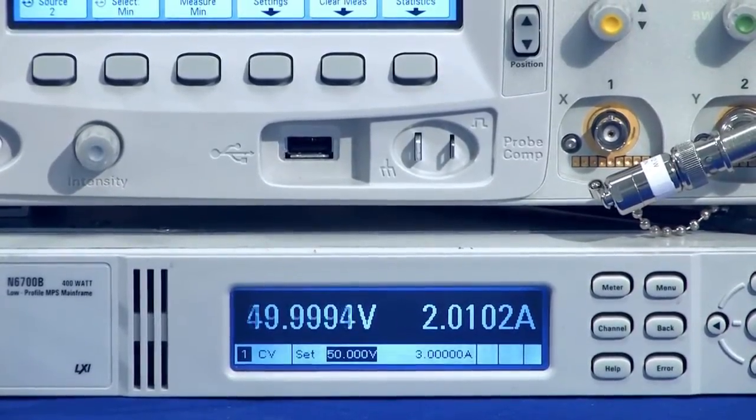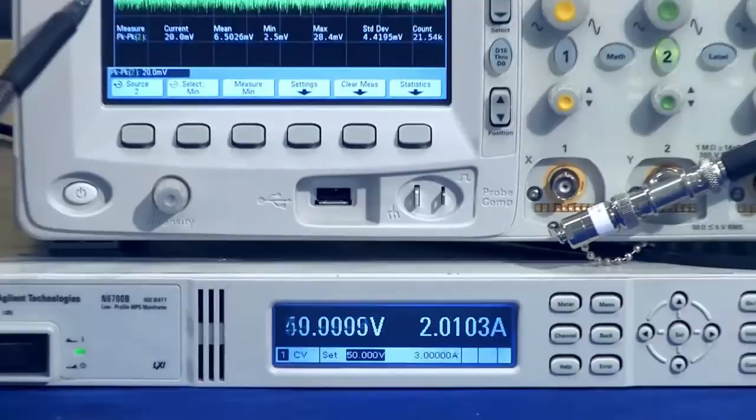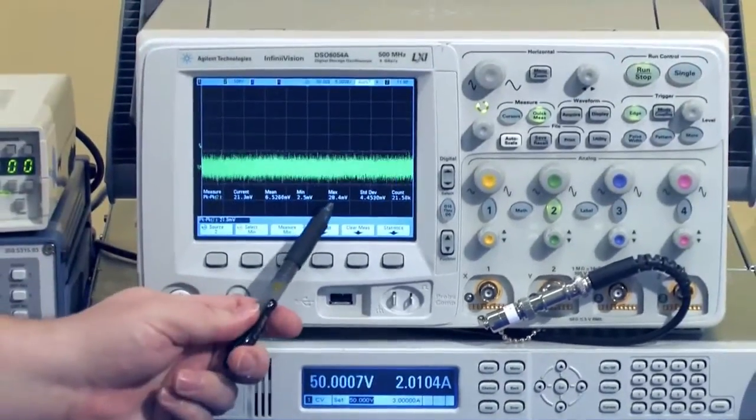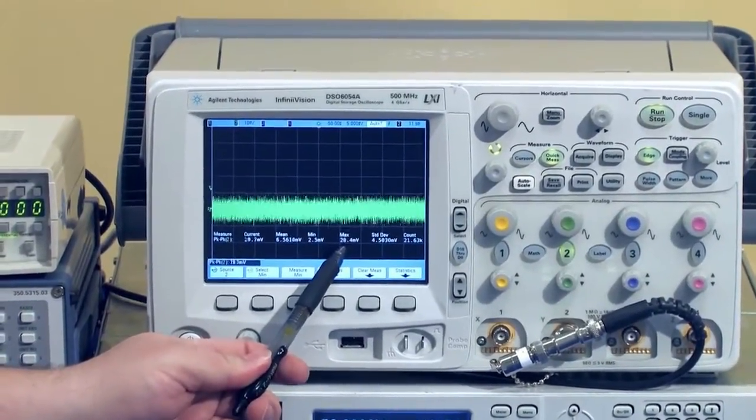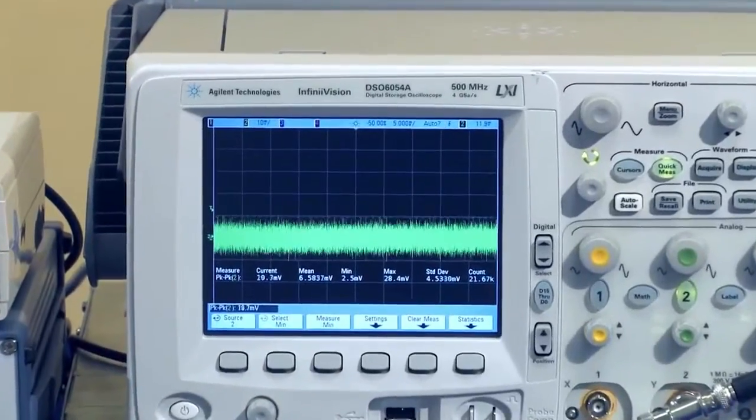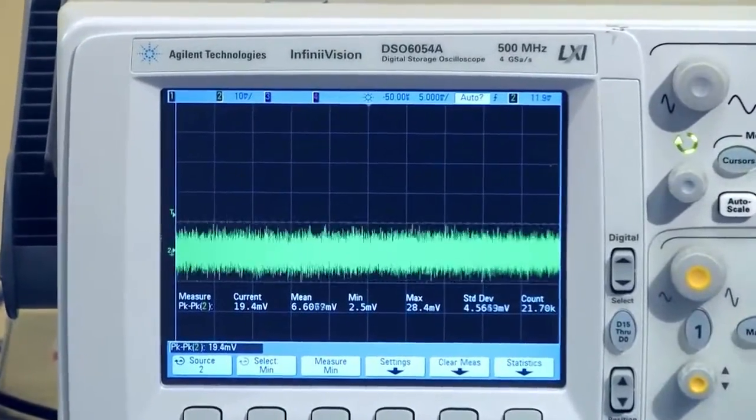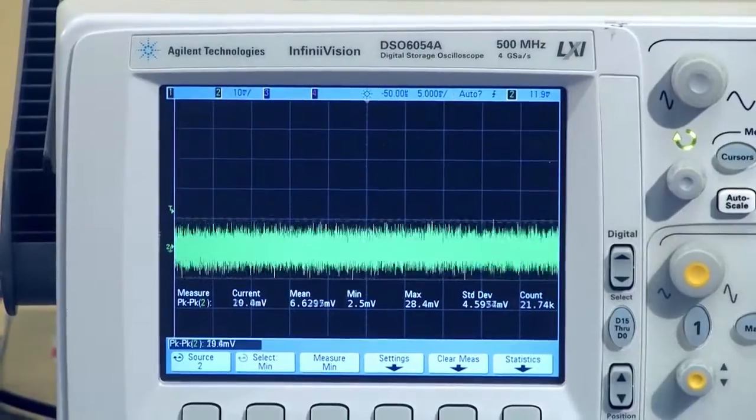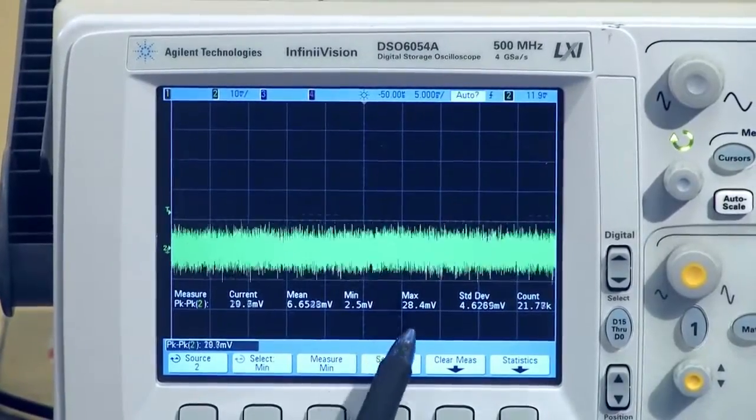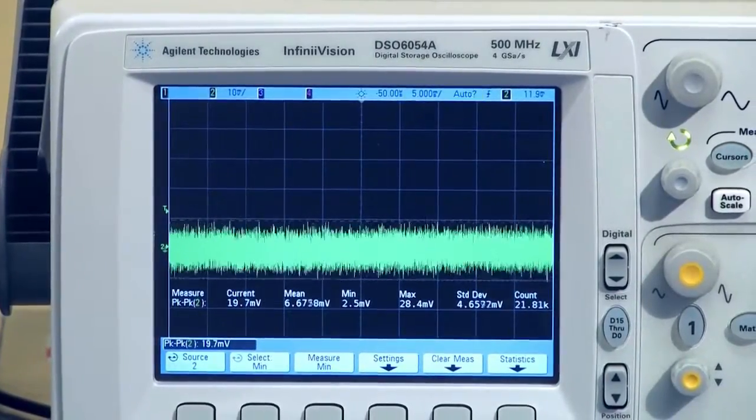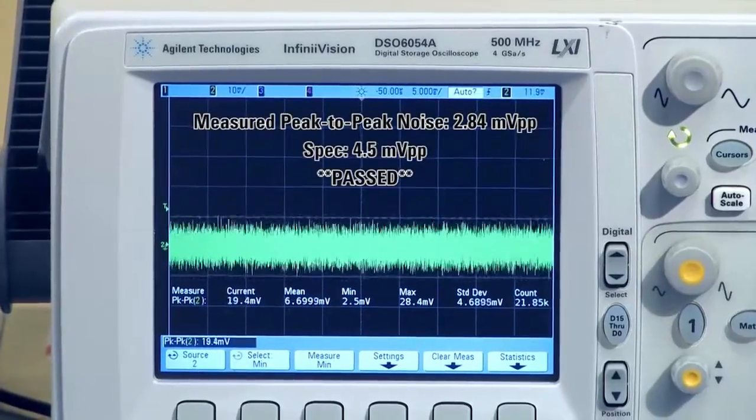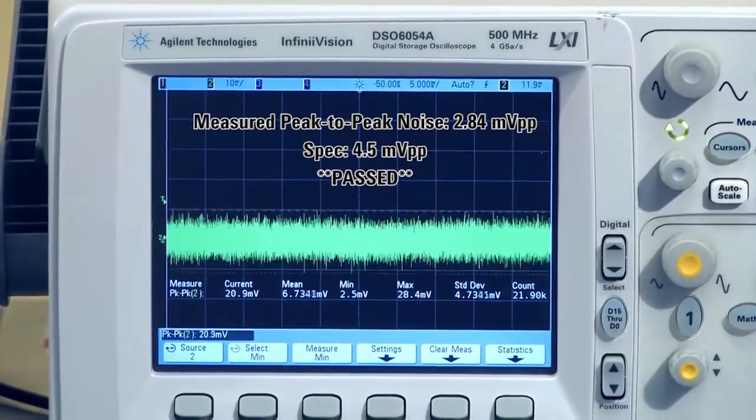Looking at the scope, you can see that the maximum peak-to-peak measured was 28.4 millivolts. Our differential amplifier is set to times 10, so you take the 28.4 millivolts divided by 10 to get 2.84 millivolts. Our specification is 4.5 millivolts, so this unit is in spec.